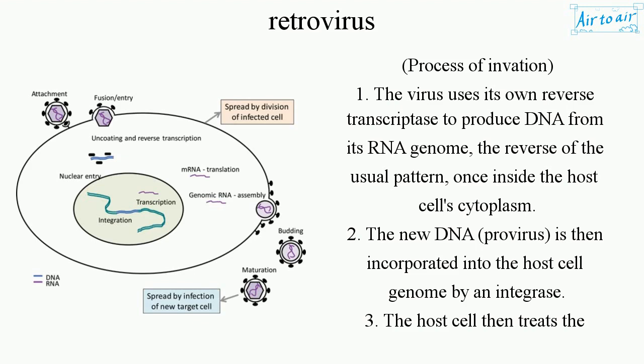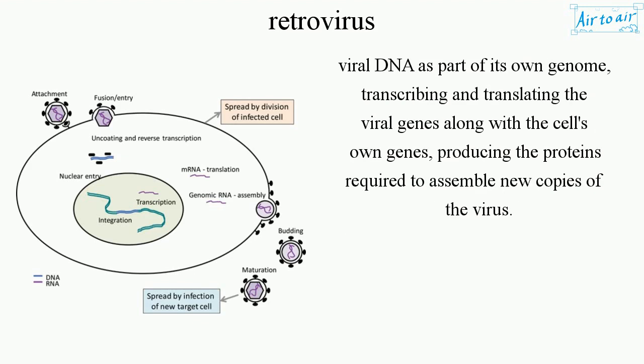Step 2: The new DNA, called Provirus, is then incorporated into the host cell genome by an integrase. Step 3: The host cell then treats the viral DNA as part of its own genome, transcribing and translating the viral genes along with the cell's own genes, producing the proteins required to assemble new copies of the virus.